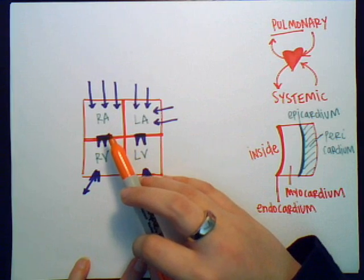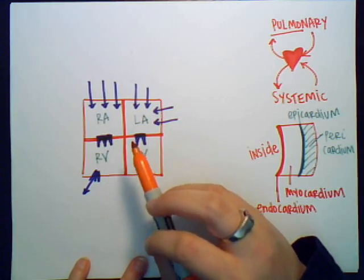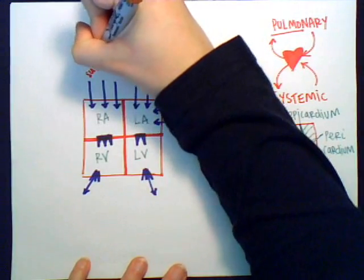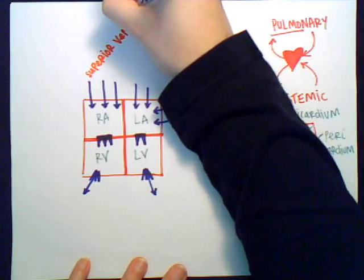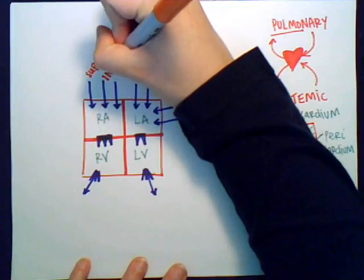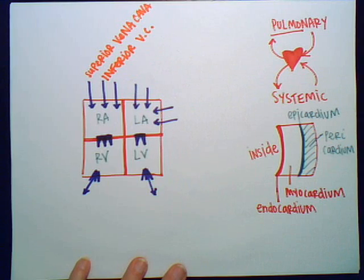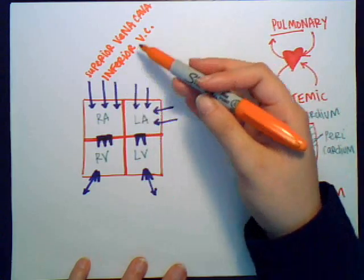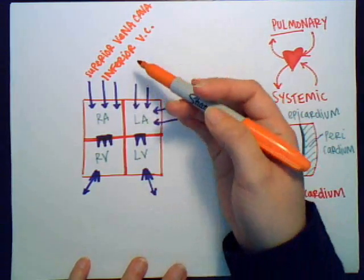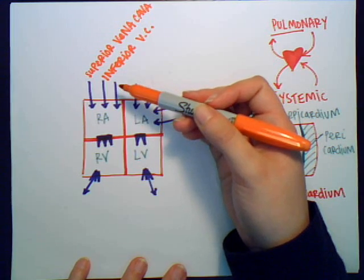Since the right atrium has blood coming into it, these must be veins. The first two are the superior vena cava and the inferior vena cava. The superior vena cava brings deoxygenated blood from all structures above the diaphragm, and the inferior vena cava brings deoxygenated blood from all structures below the diaphragm.